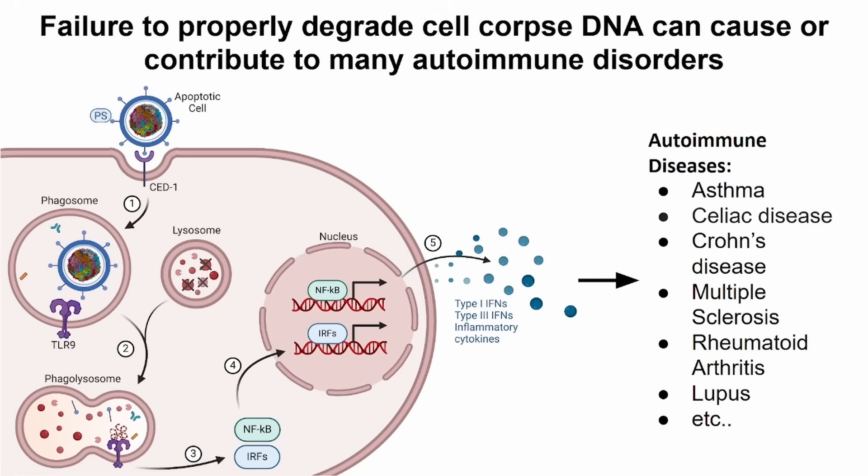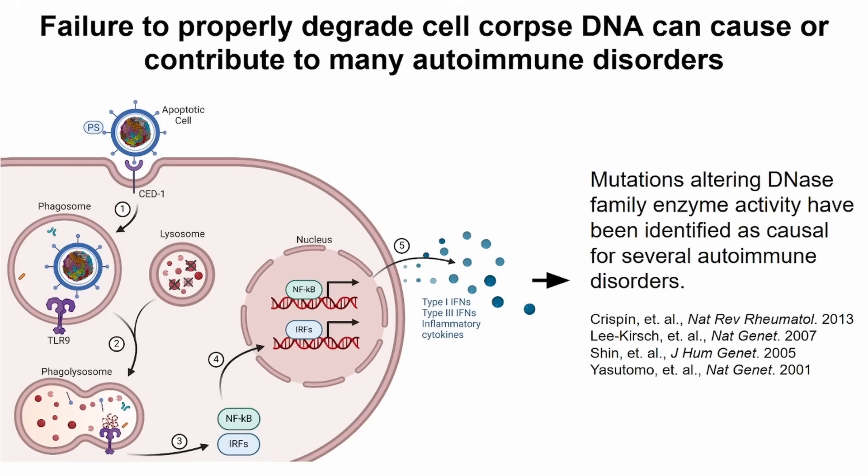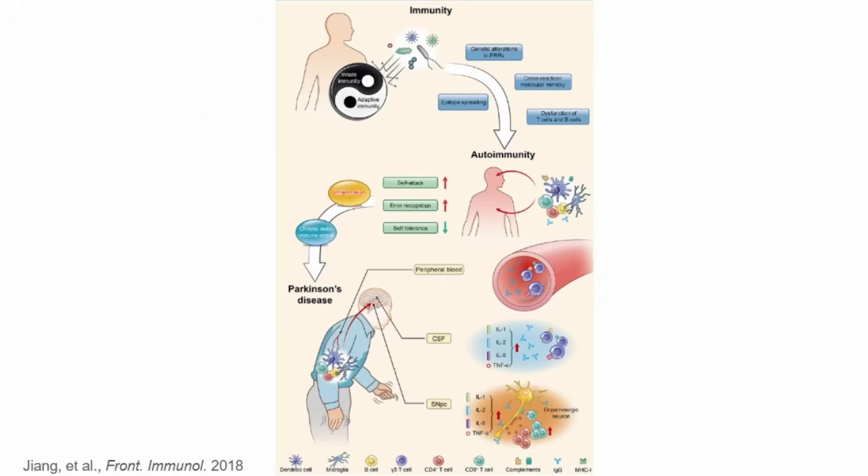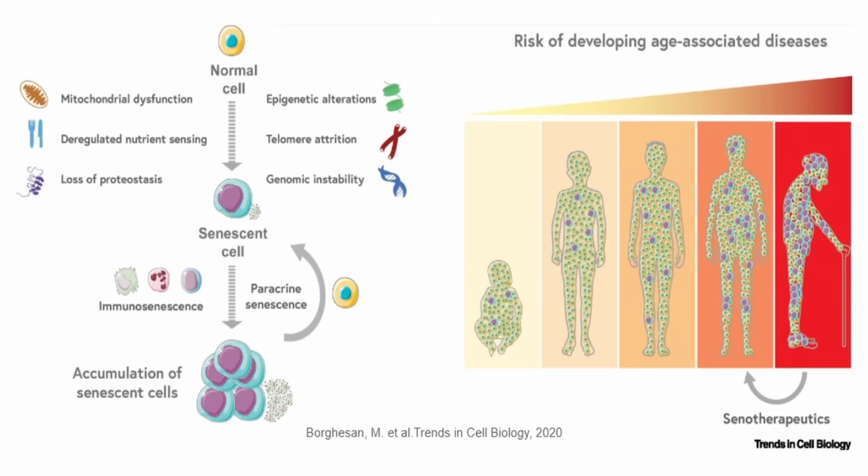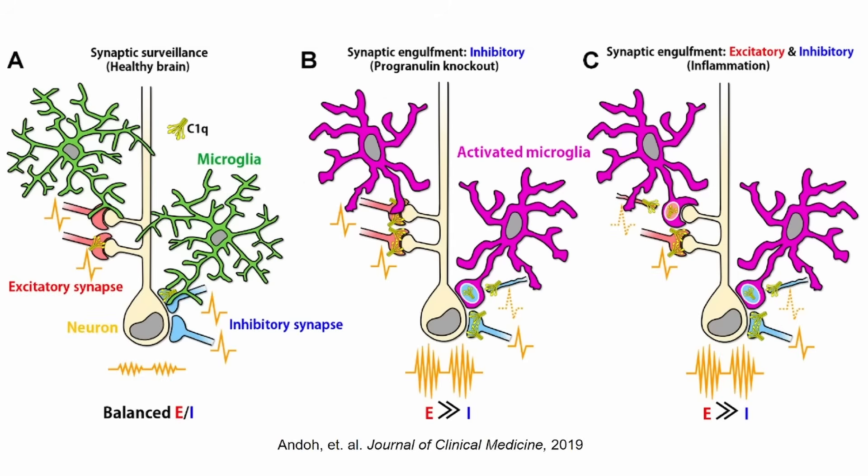There are a lot of diseases that can occur when cellular recycling isn't working properly. Physical and neurodevelopmental disorders, as well as neurodegenerative disorders associated with aging, are just a few broad examples. We don't have therapeutic solutions for many of these diseases because there's still a lot that we don't understand about the fundamental process.